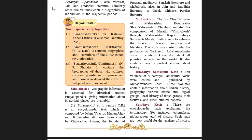Some special encyclopedias: number one, Sangeet Shastrakar Va Kalavanta Yancha Itihas by Lakshman Dattatre Joshi. Number two, Kranti Karyancha Charitra Kosh by S.R. Date — it contains biographies and illustrations of about 250 Indian revolutionaries. Number three, Svatantra Sainik Charitra Kosh by N.R. Fatak — it contains biographies of those who suffered corporal punishment and imprisonment and devoted their lives to the independence movement.